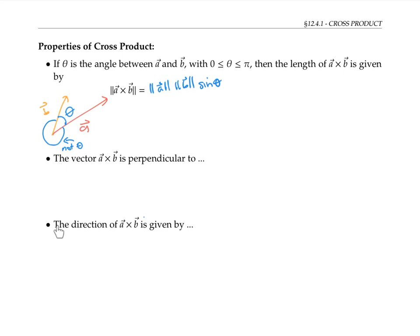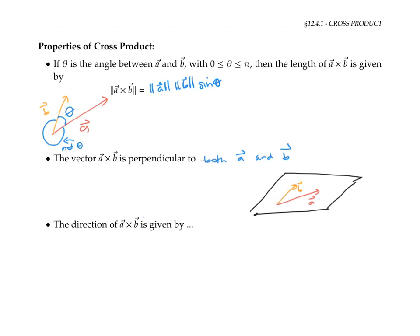The next two properties tell us about the direction of a cross b. First, the vector a cross b is perpendicular to both a and b. So if a and b lie in a plane, then a cross b must stick straight out of that plane. Even if we specify the length of a vector perpendicular to a and b, there are still two options — the vector could point in one direction or the opposite direction. It turns out that the direction of a cross b is given by the right-hand rule.